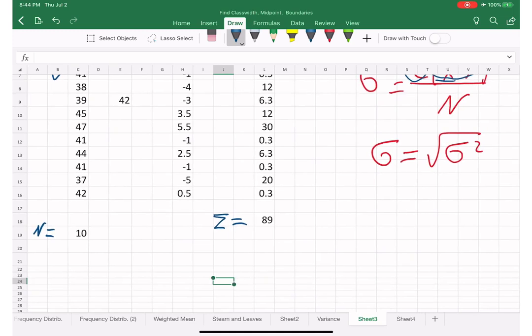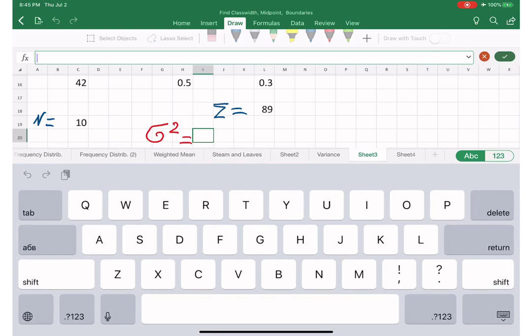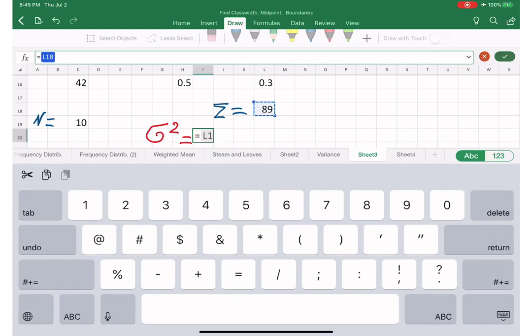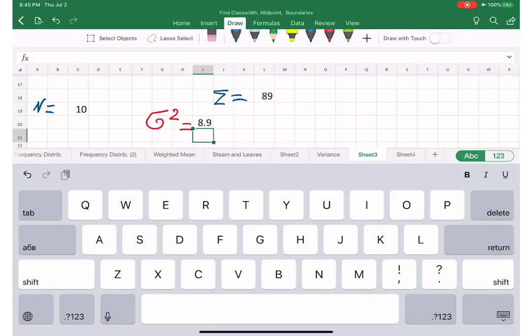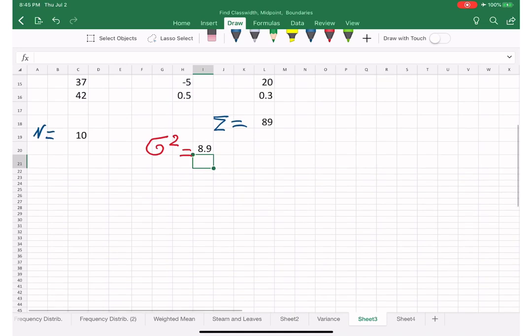And lastly, to find out our sigma squared population variance, let's do it here. It's going to be equal sign. I'm taking this cell and divide by this cell. We got it. 8.9.